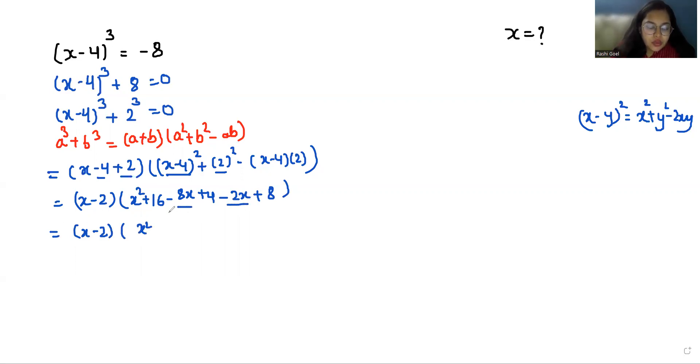Combining like terms: -8x - 2x = -10x. And 16 + 4 + 8 = 28. So we have (x - 2)(x² - 10x + 28) = 0.